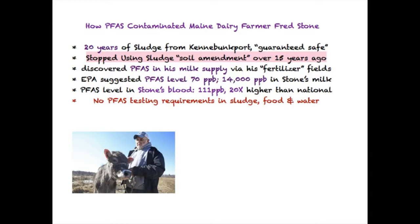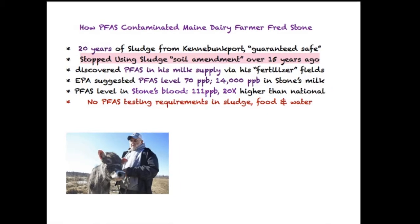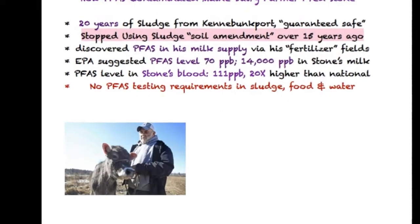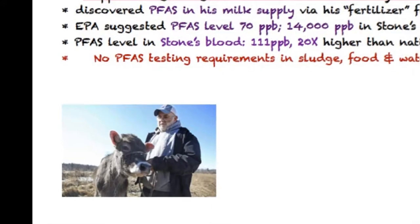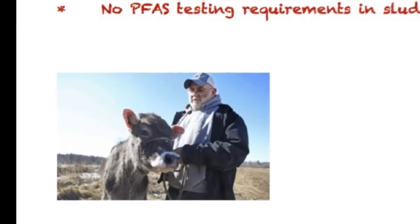This is Fred Stone, the dairy farmer from Maine. The farm was in the family 100 years. He stopped using the sewage sludge 15 years ago, but the level of contamination is still so high that he cannot sell his product. He has put thousands of dollars into trying to remediate — updating his equipment, even changing out his cows. He keeps excellent records and is in a lawsuit right now.